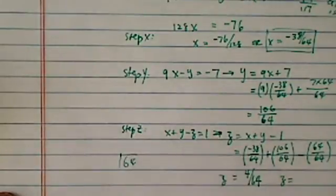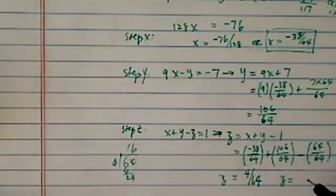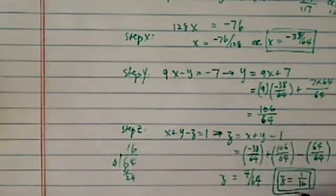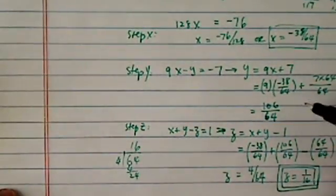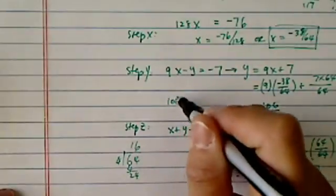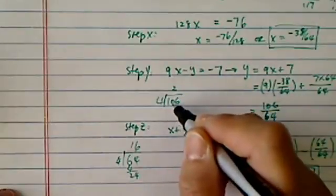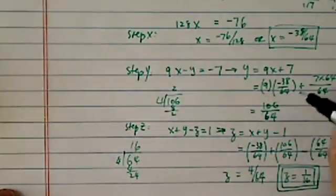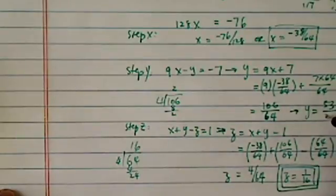So z is equal to — let's divide it by 4. 4 over 64 divided by 4 gives us 1 over 16. So z equals 1 over 16. Then dividing y: 166 over 64 divided by 2 gives my y equal to 53 over 32.